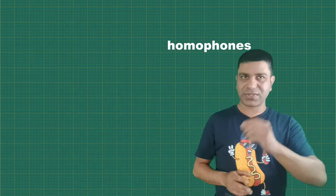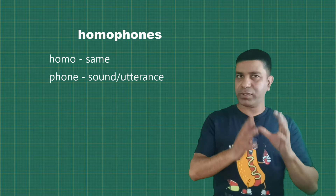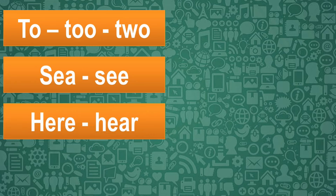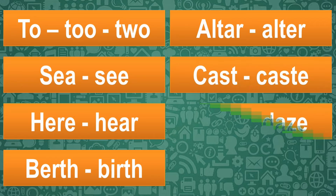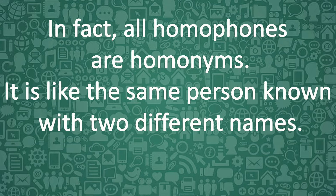Some words sound the same but have different spellings and meanings. Such words are called homophones. In Greek, homo means same and phone means sound or utterance. So homophones are similar sounding words with different meanings and different spellings. Some examples are: to/too/two, see/sea, hear/here, birth/berth, altar/alter, cast/caste, days/daze, etc. In fact, all homophones are homonyms — it is like the same person known by two different names.